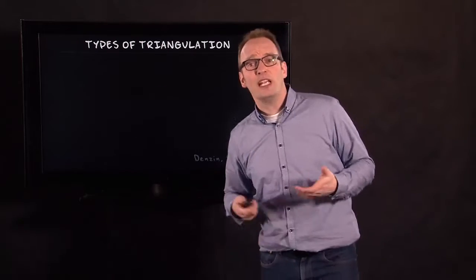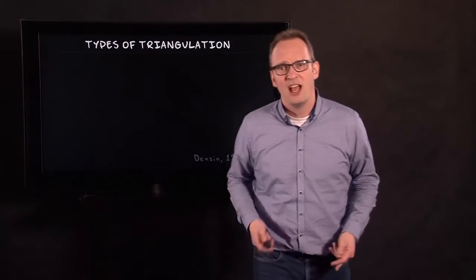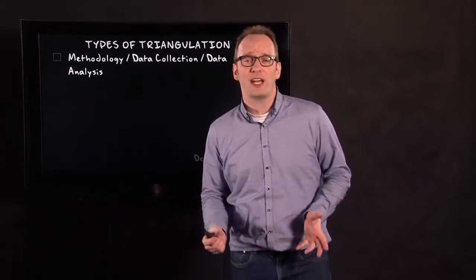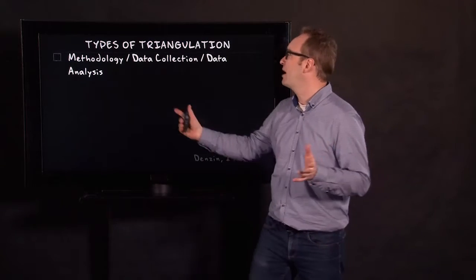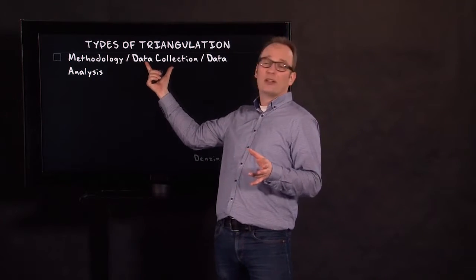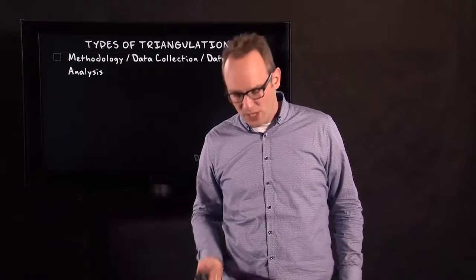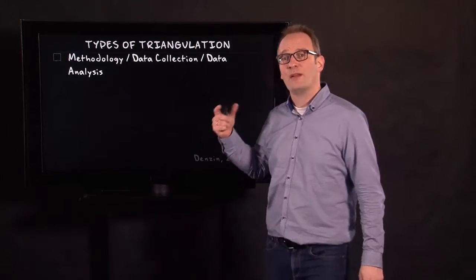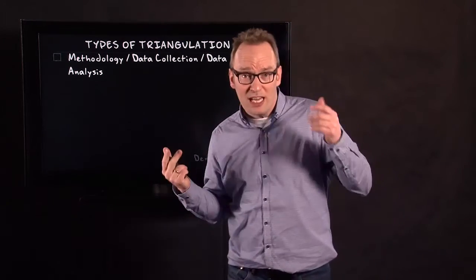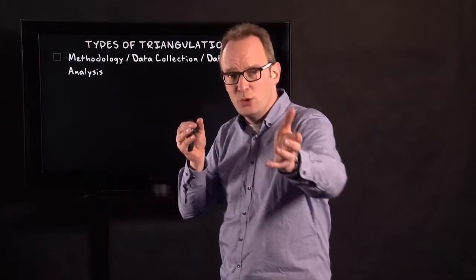Triangulation for qualitative research was coined by Norman Denzin in the 1970s. And he said there are four types of triangulation. The first type of triangulation is triangulation by methodology or to say it more precisely by data collection or data analysis method. It's easy to explain using data collection methods. If you are doing an interview and you are observing, you are using two methods.